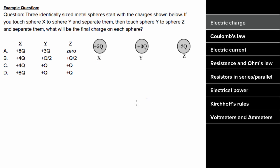The total charge initially is gonna equal the total charge finally after any process. So what's an example problem involving electric charge look like? Let's say three identically sized metal spheres start off with the charges seen below: positive 5Q, positive 3Q, and negative 2Q. If we touch sphere X to sphere Y and separate them, and then touch sphere Y to sphere Z and separate them, what will be the final charge on each sphere?